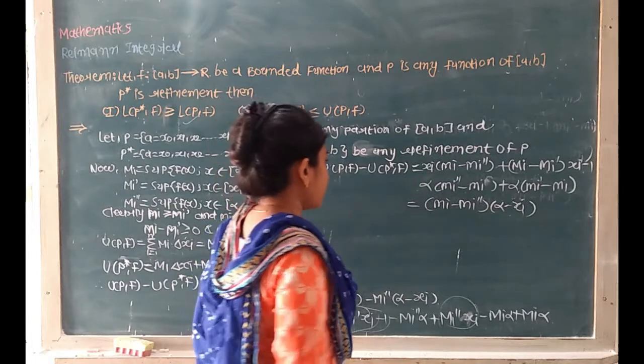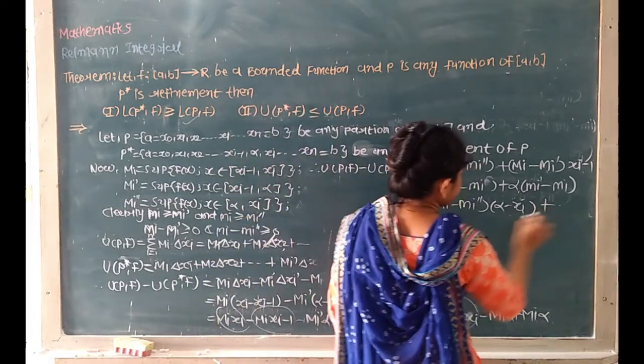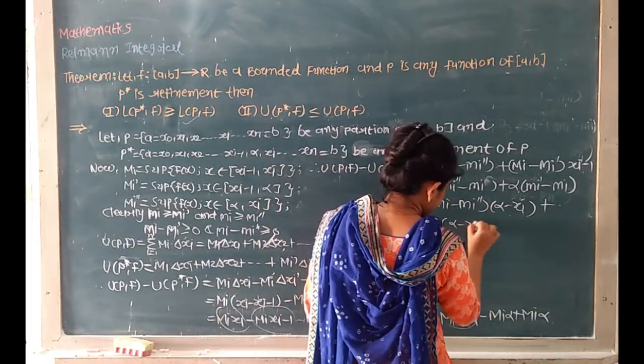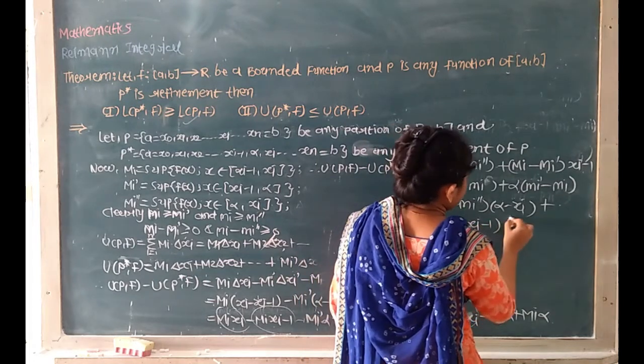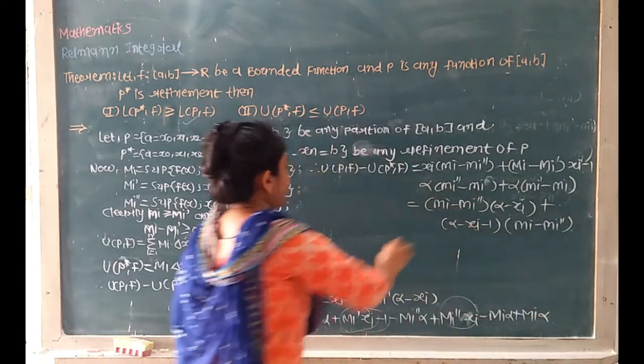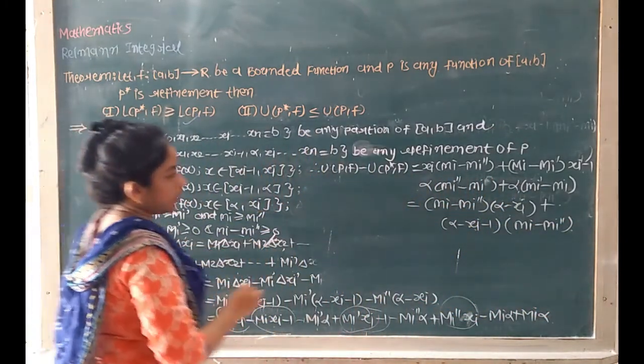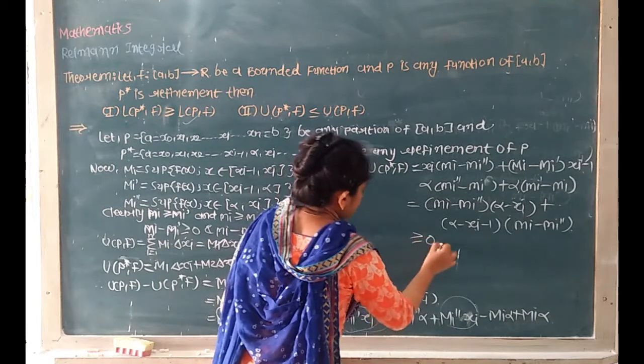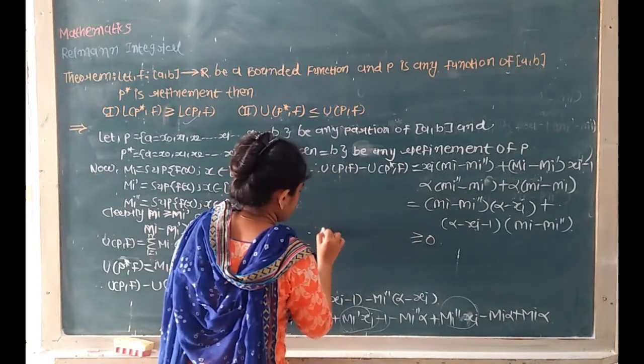And alpha minus xi minus 1, and Mi minus Mi double dash. But after equality, greater than or equal to zero. Greater than or equal to zero.